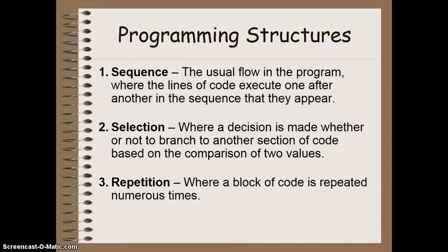The second structure we have is selection, which we did yesterday. And this is where the computer makes a decision to execute a section of code or not, based upon the comparison of two or more values. And the third type of programming structure that we're going to look at today is repetition. And this is where a block of code can be repeated multiple times through a loop.